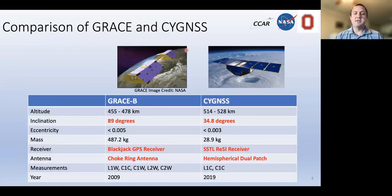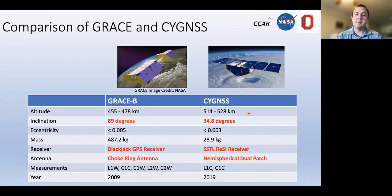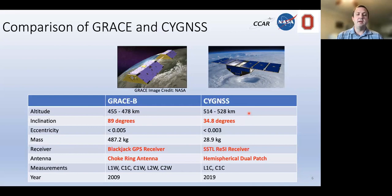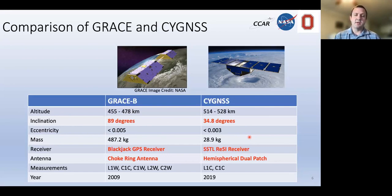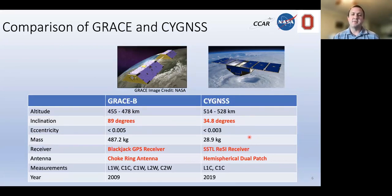Comparing the two spacecraft: they have similar orbital altitudes close to 500 kilometers, but very different inclinations. GRACE is in a polar orbit, while Cygnus, whose primary mission targets tropical wind speed and hurricanes, has an inclination of only 35 degrees. GRACE has a geodetic-quality Blackjack GPS receiver, whereas Cygnus has an SSTL RESI receiver. GRACE also has a chokering antenna to reduce noise, while Cygnus has just a dual patch antenna. We use the original GRACE mission data from 2009, which is similar in the solar cycle to Cygnus, so we expect similar ionosphere effects.